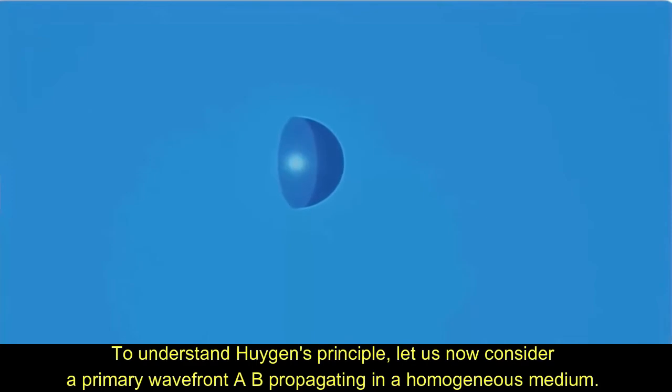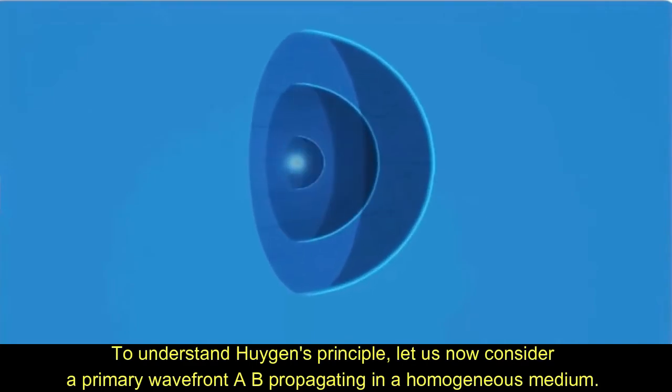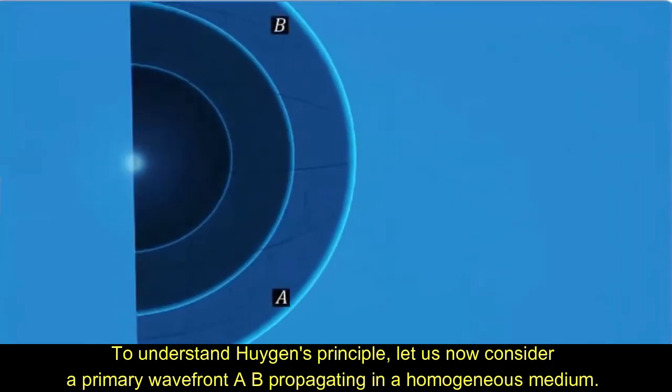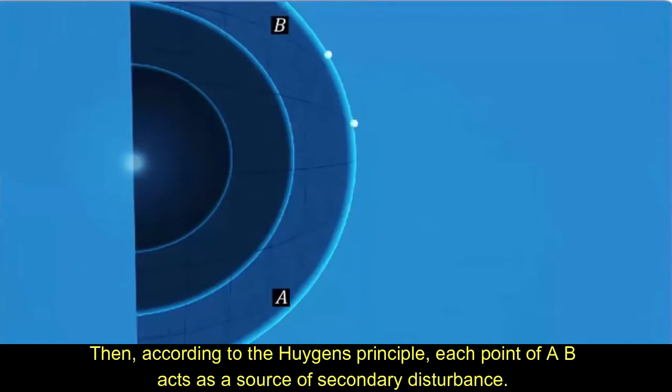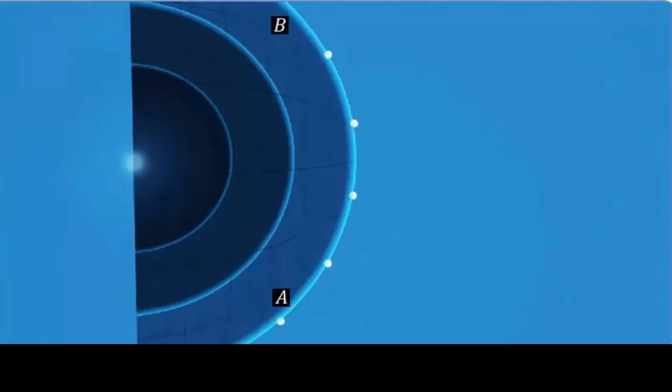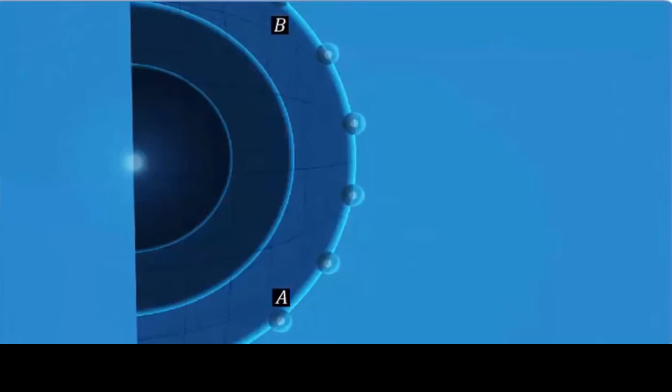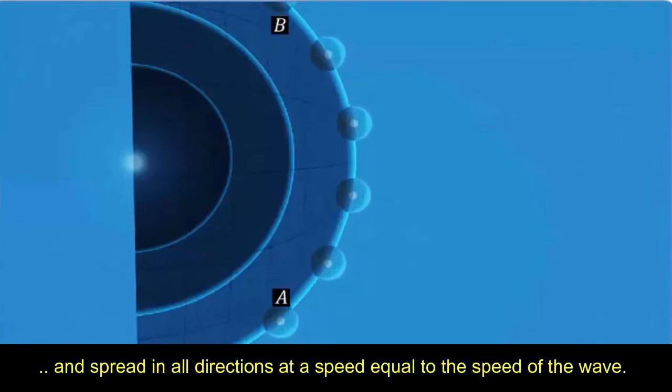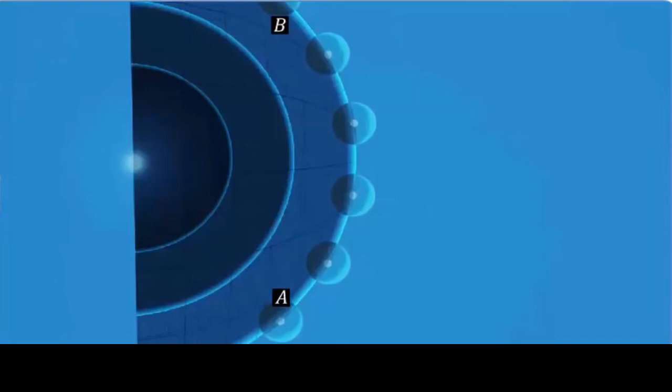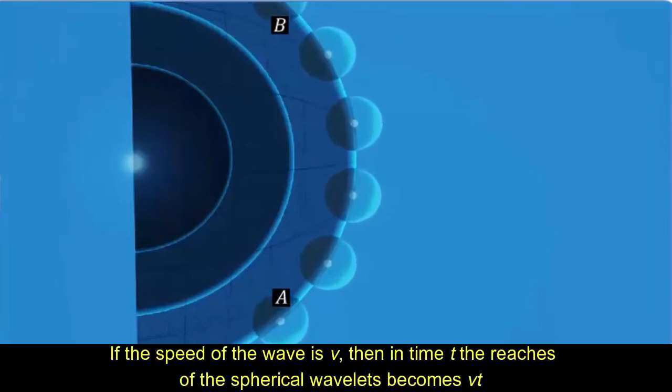To understand Huygens Principle, let us now consider a primary wavefront AB propagating in a homogeneous medium. Then, according to the Huygens Principle, each point of AB acts as a source of secondary disturbance. The secondary wavelets emanated from these points are spherical in shape and spread in all directions at a speed equal to the speed of the wave. If the speed of the wave is V, then in time t, the radius of the spherical wavelets becomes Vt.